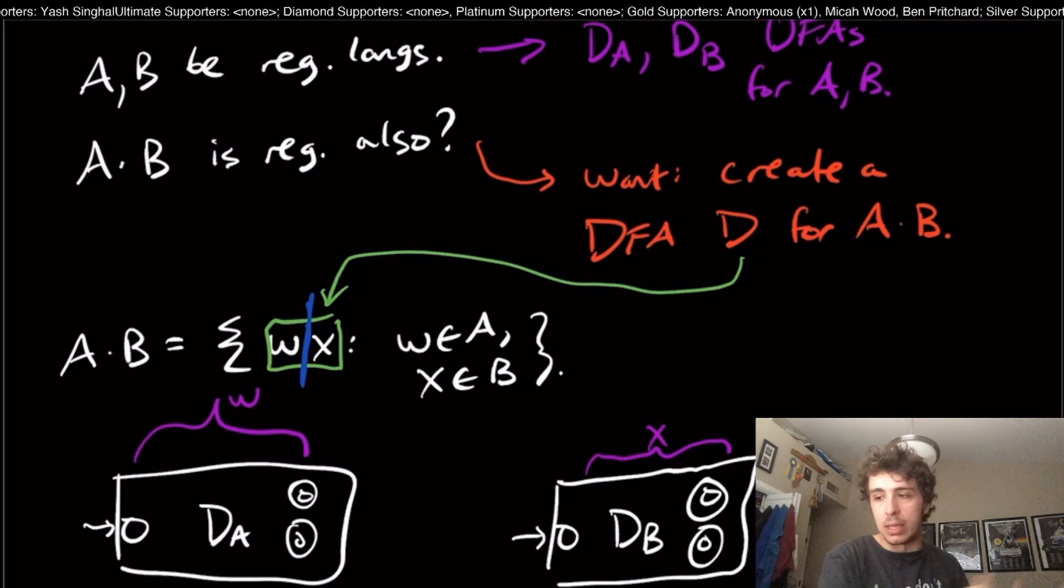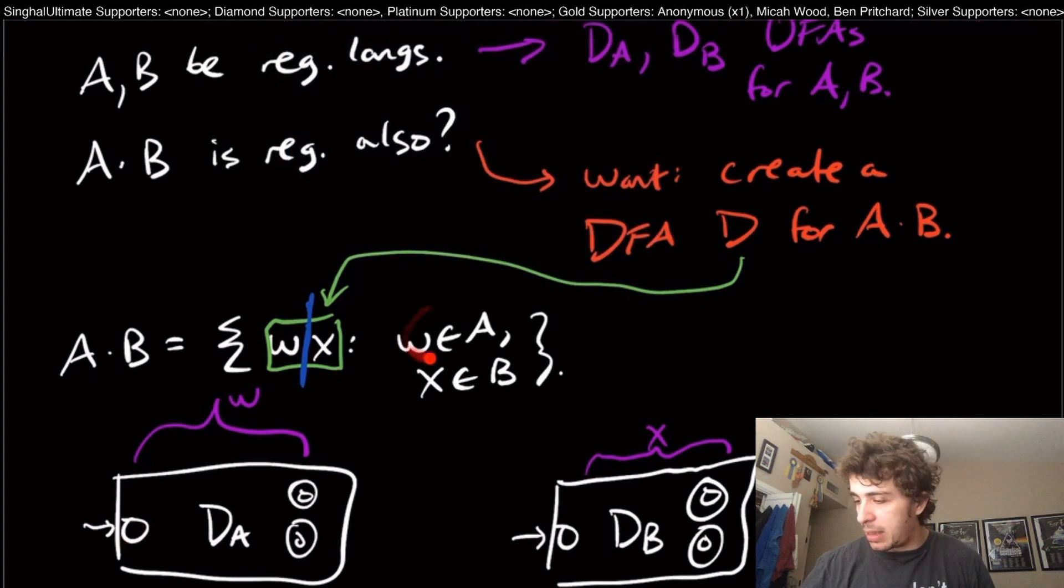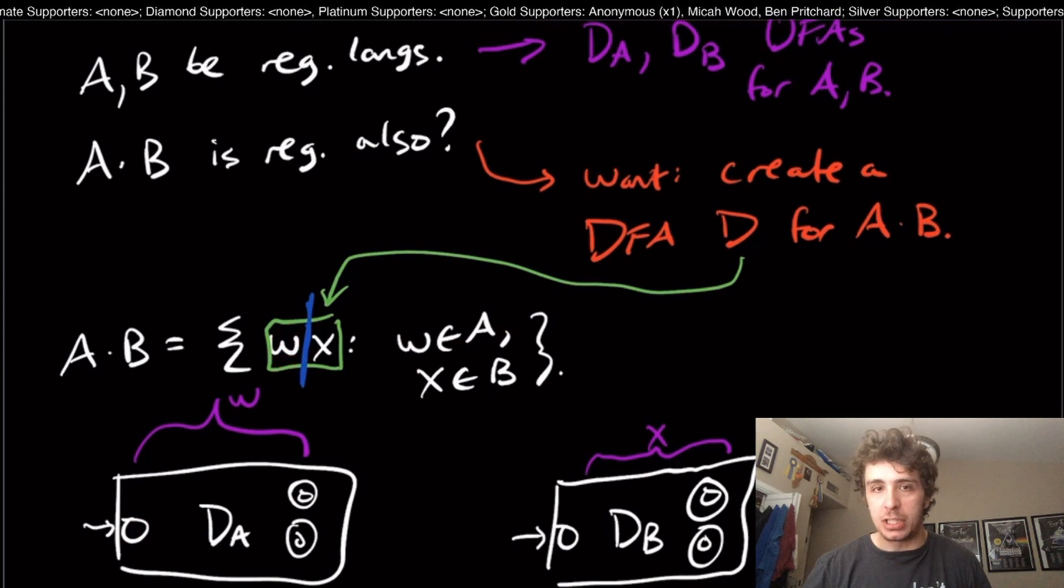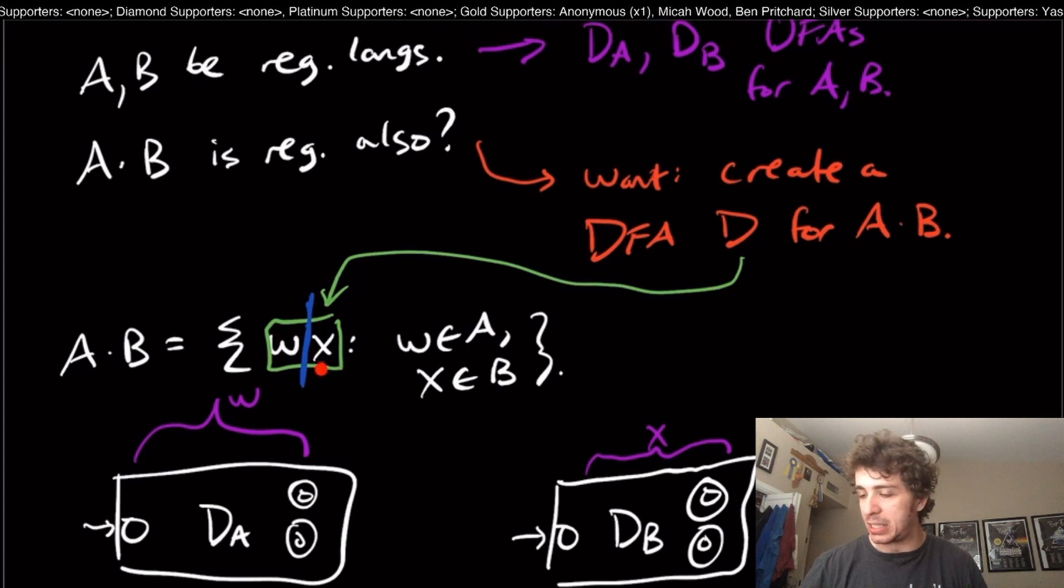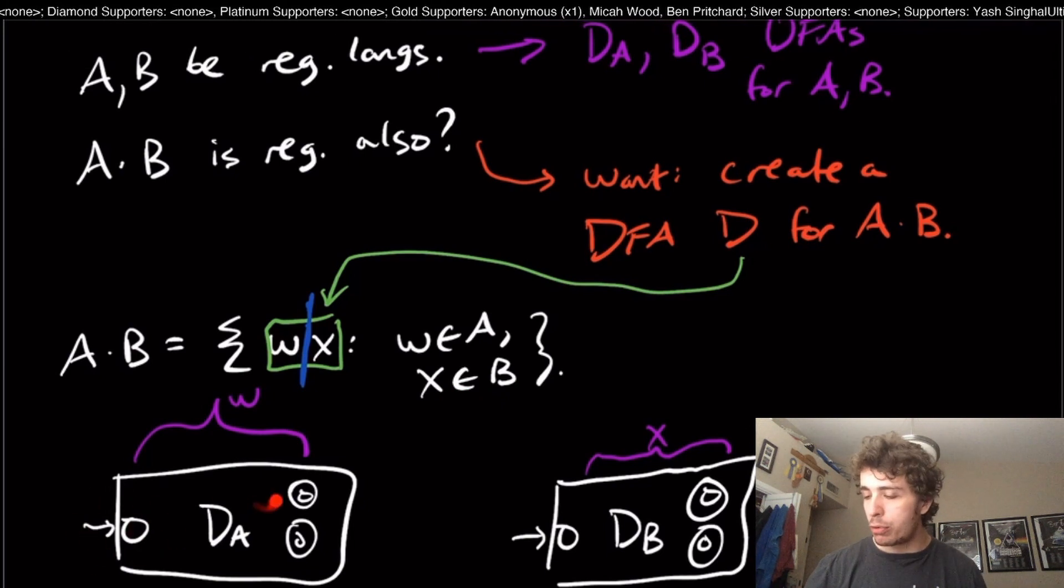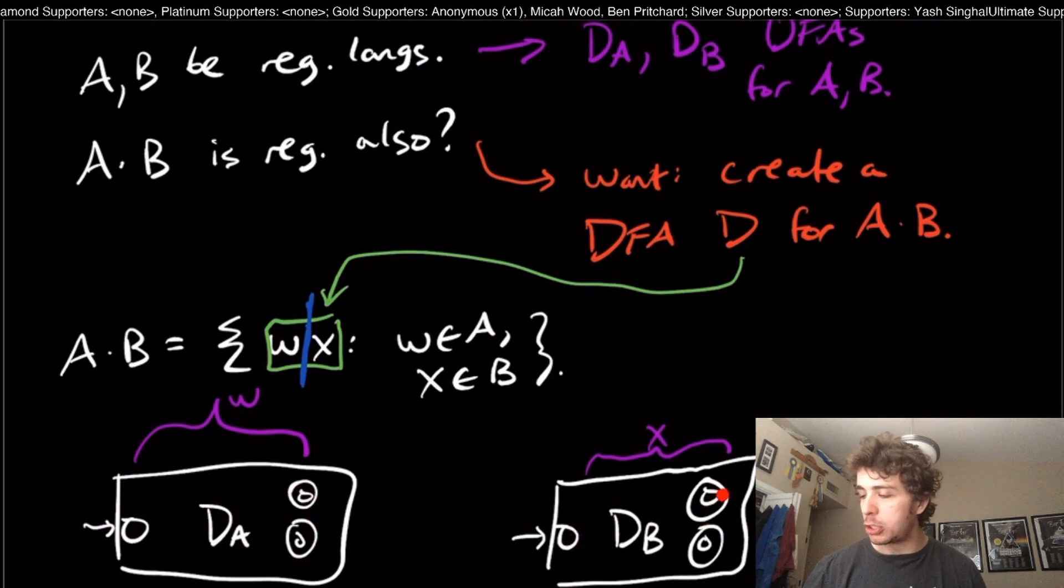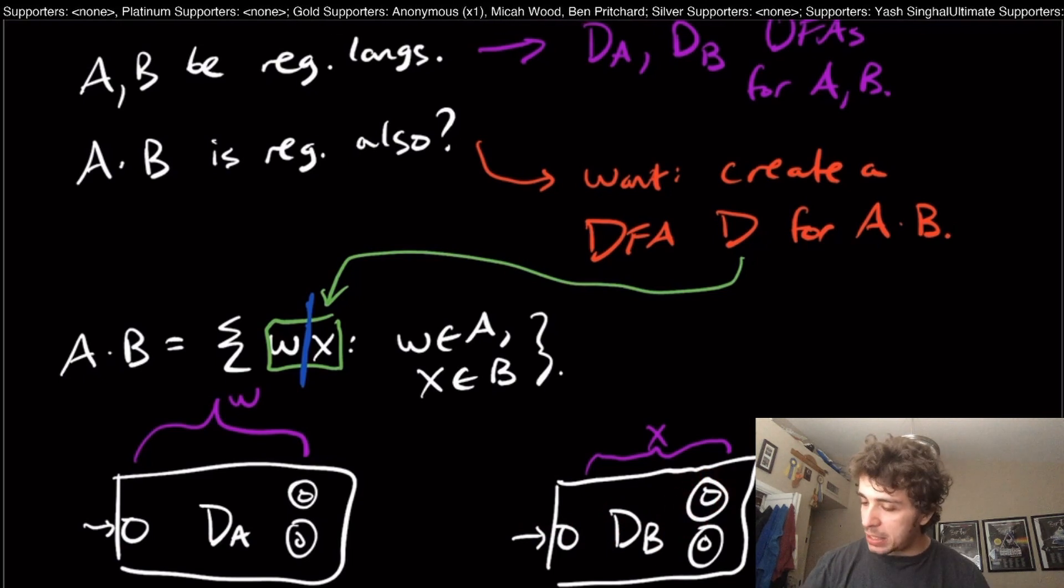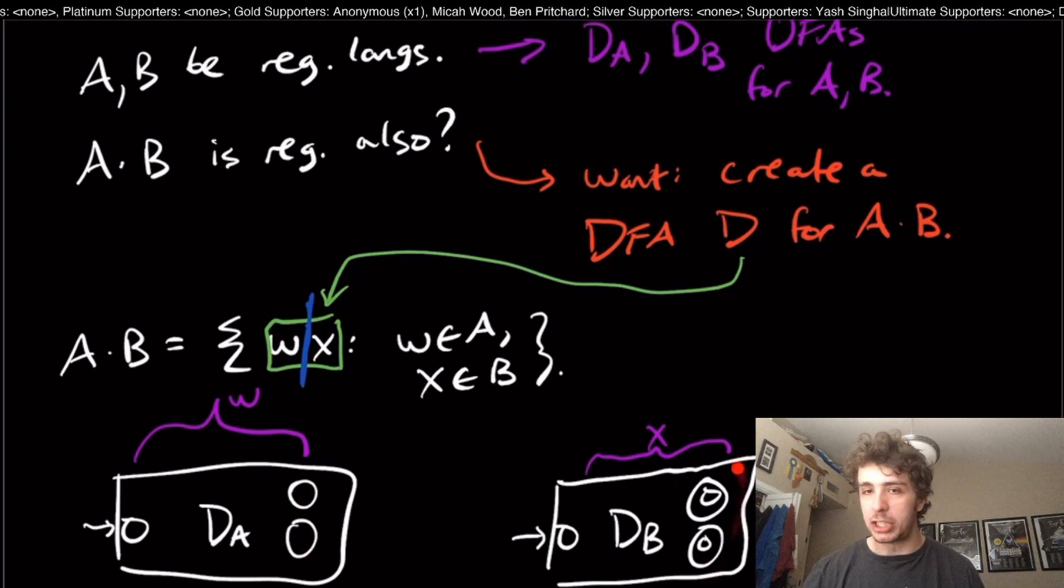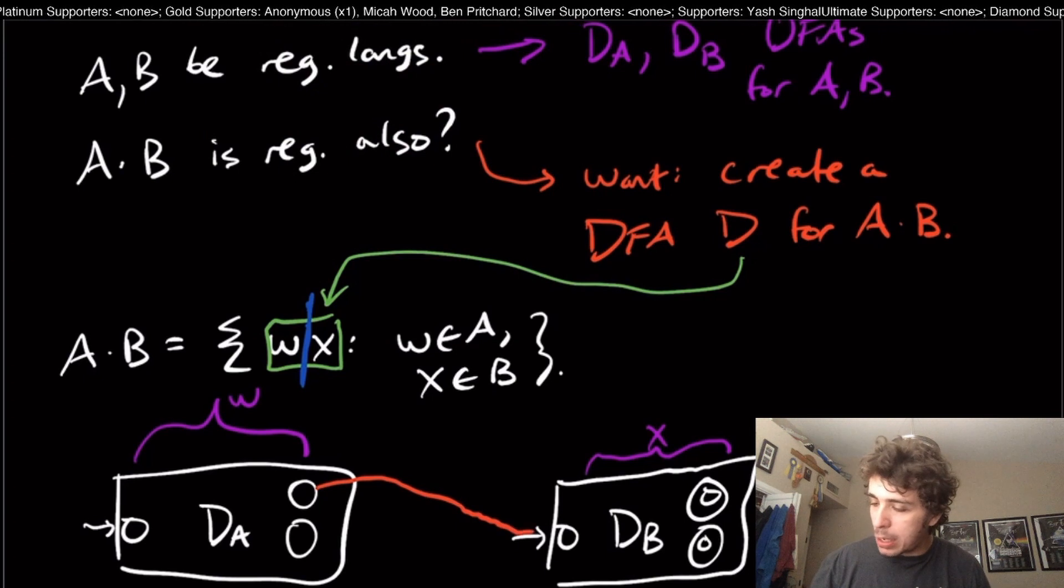A naive approach might be: okay, that means that we've gotta start here because the A language is first. The strings that I have to accept according to A have to be first, and then the B ones have to be second because x is the second part. That means that we've gotta start in this start state, go through this machine somehow, then somehow jump over to here and then go through this machine and end up in one of those final states. So I shouldn't make these two states final anymore and leave these ones to be the final ones. But the problem is: how do I actually go over to here?